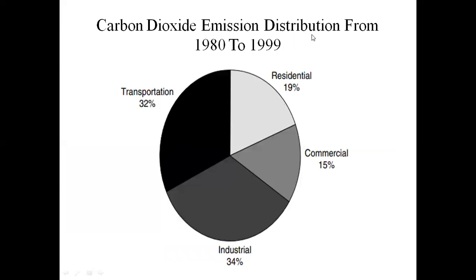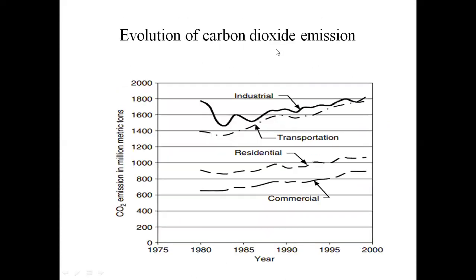This is the carbon dioxide emission distribution form from 1982 to 1999. Transportation accounts for 32% of CO2 emission, residential accounts for 19%, commercial for 15%, and the remaining percentage is due to industrial sources. Carbon dioxide emission in million metric tons is shown from 1975 to 2000, ranging from zero to 2000 metric tons.